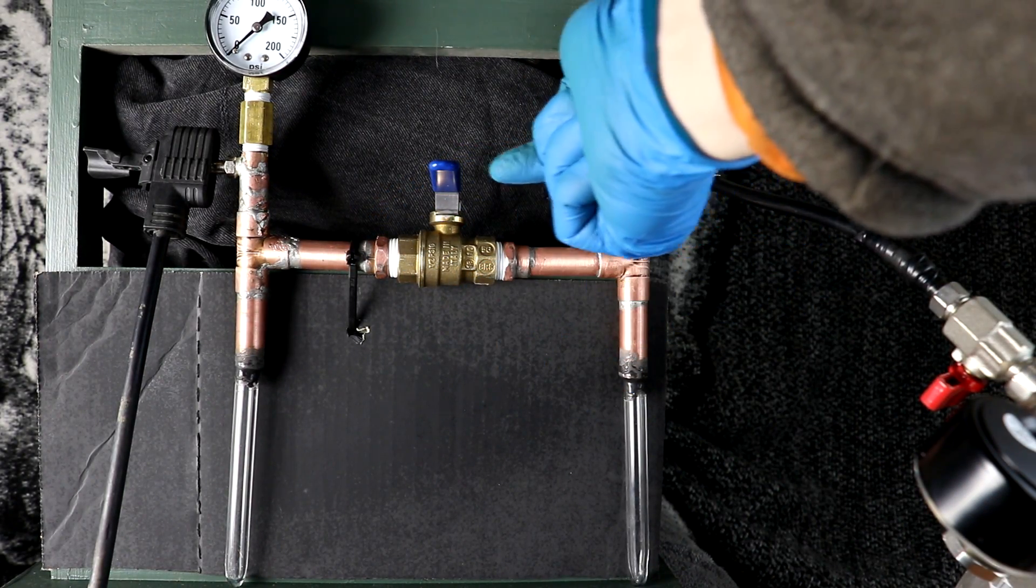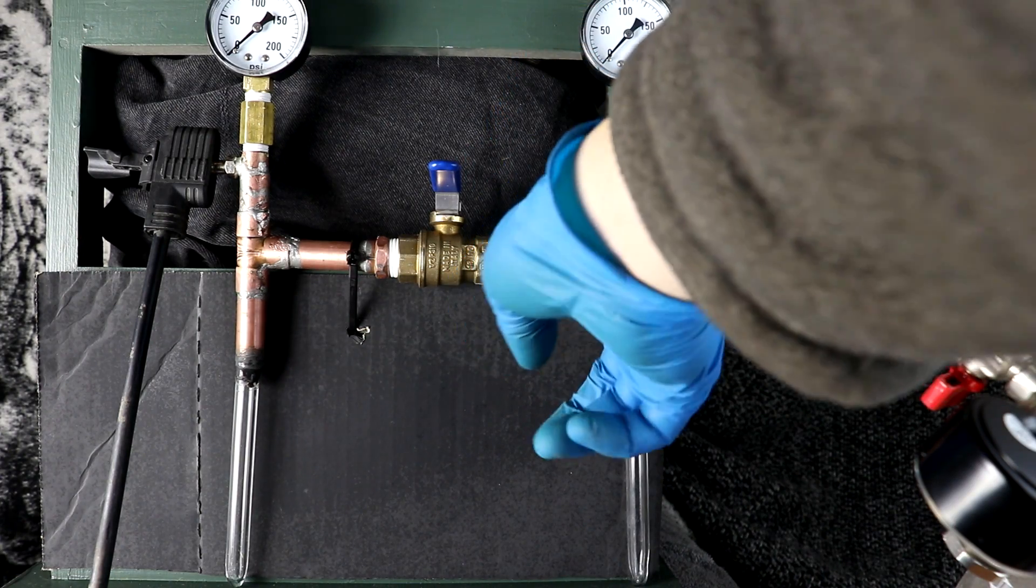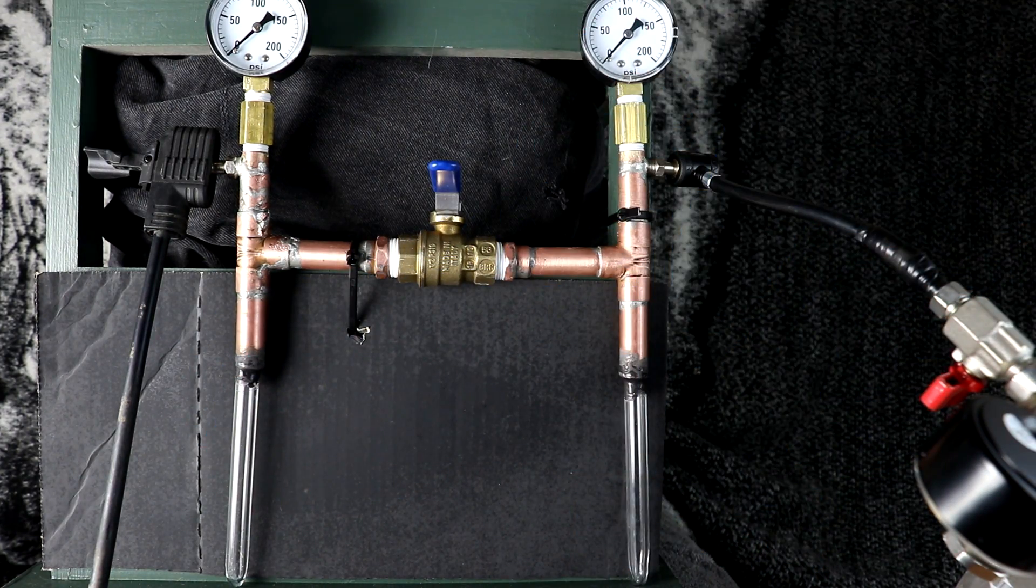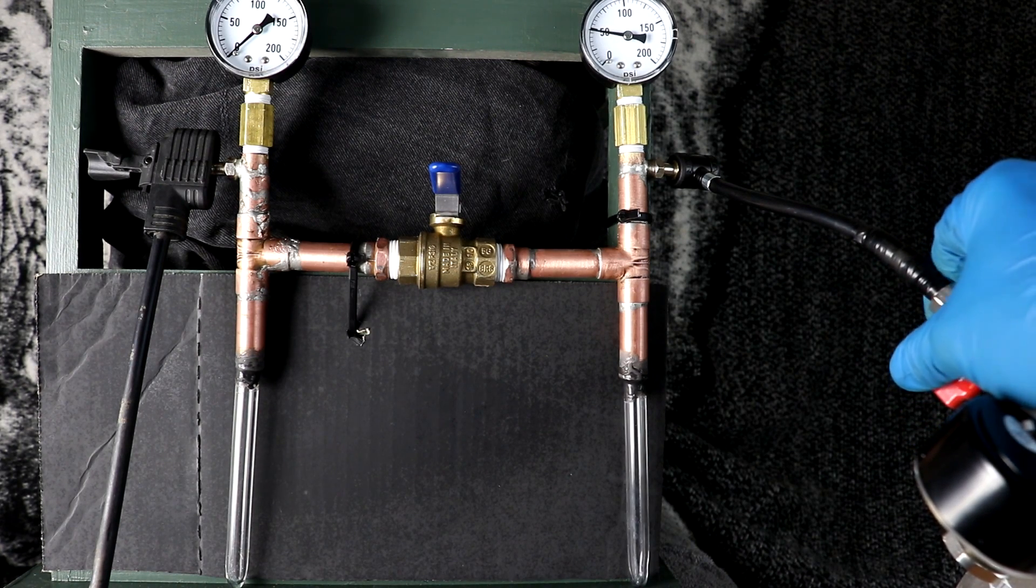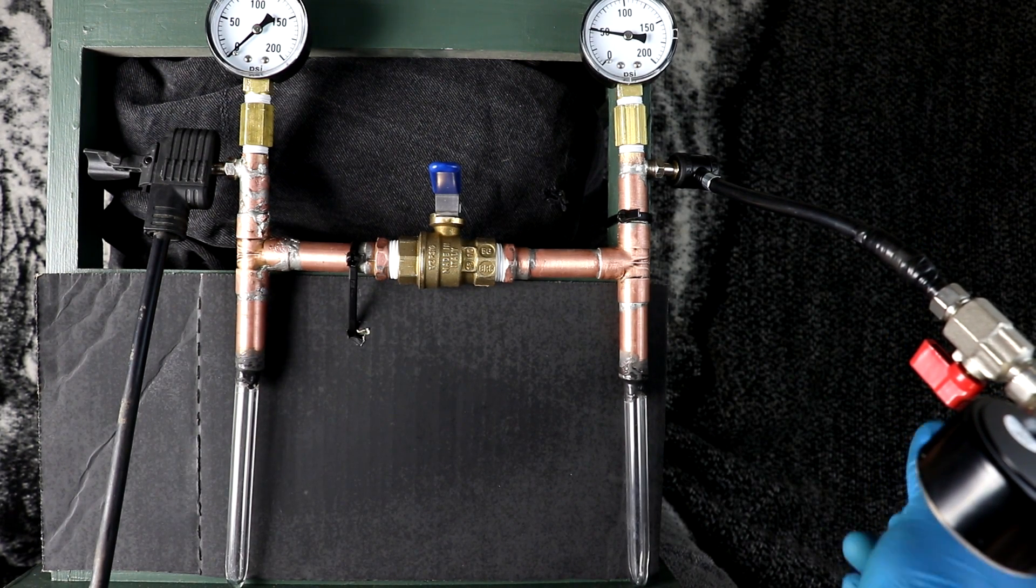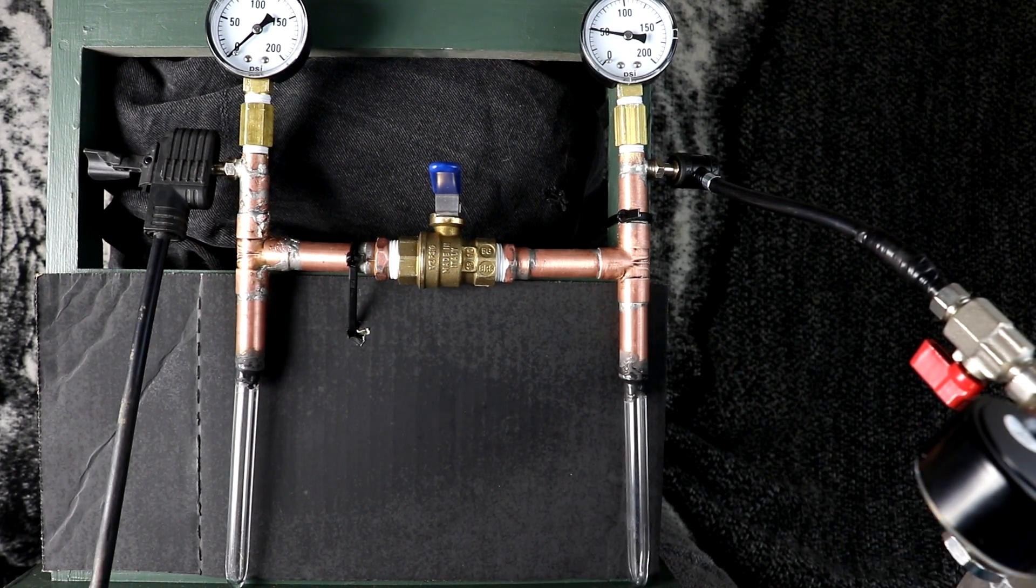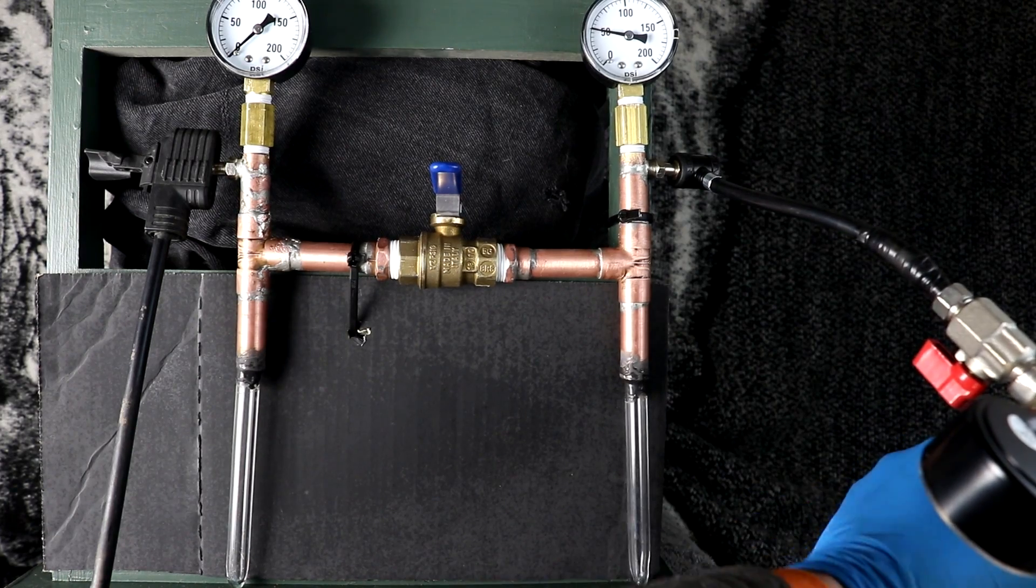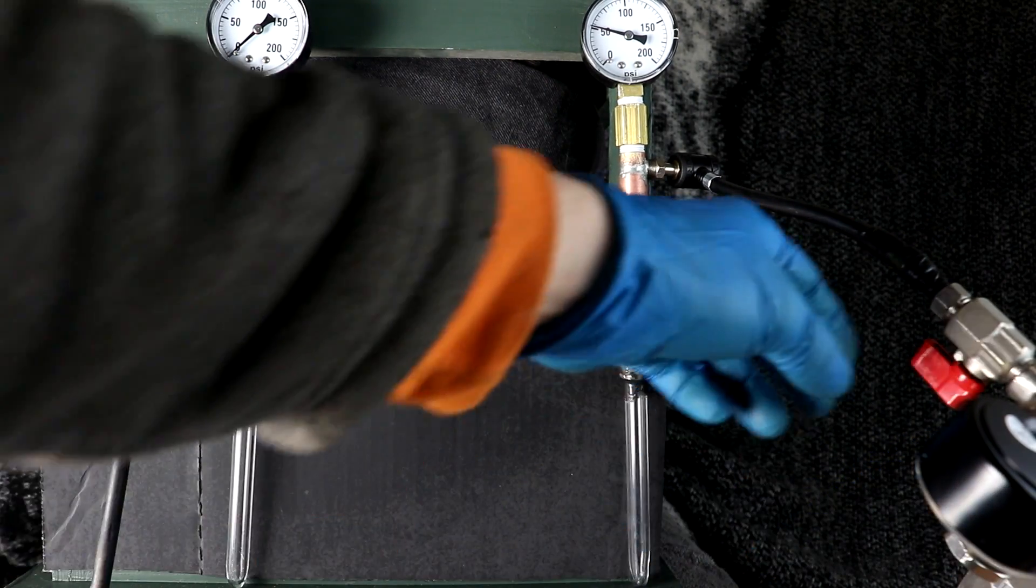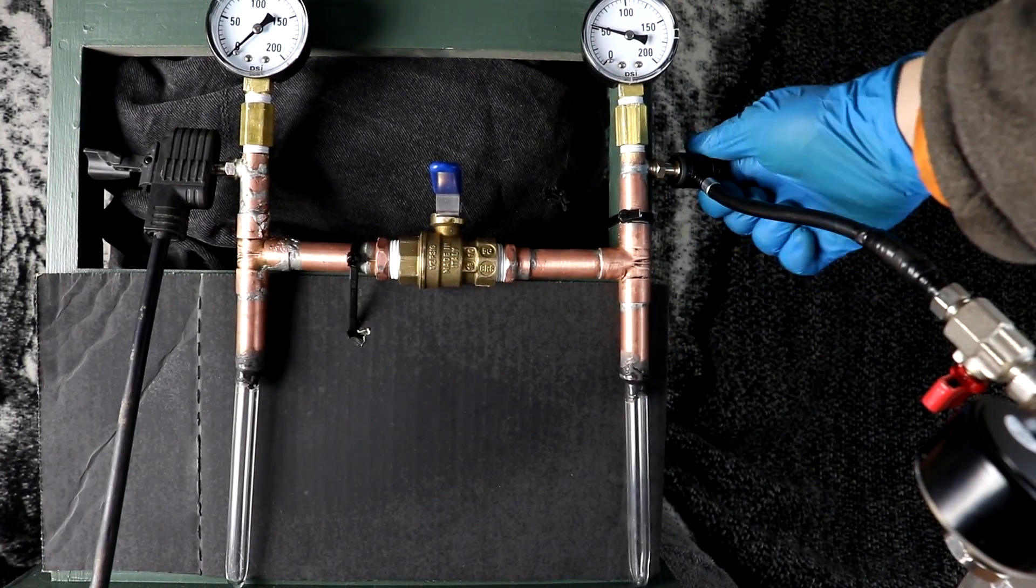You can see the valve here is turned off and the whole system is evacuated of all the air. So let's pressurize the right side with carbon dioxide, try to get that up to a nice round number, let's try for 50 or so. There we go, I should be able to just take this off.